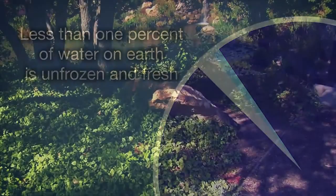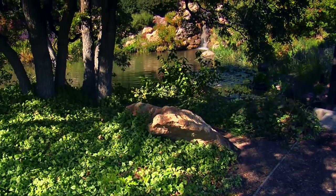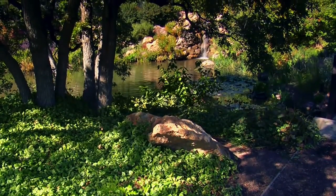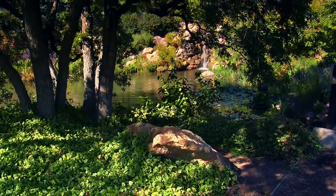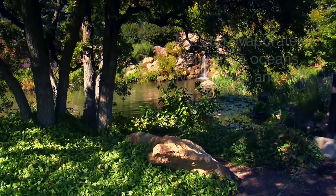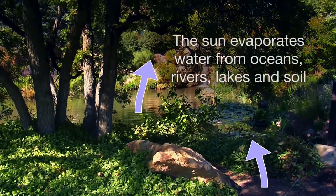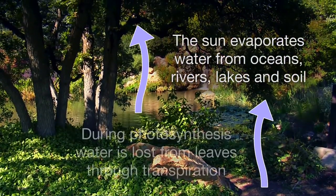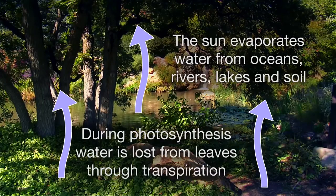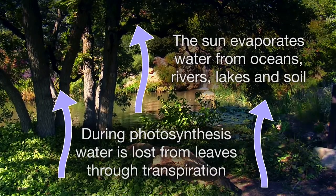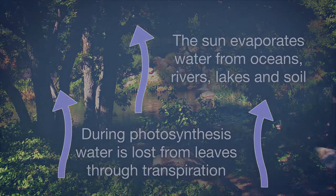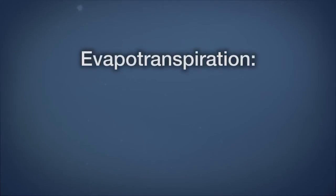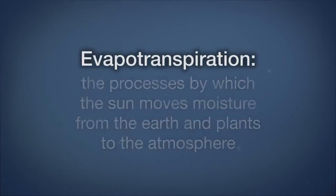The sun is one of the drivers of the hydrologic cycle. Energy from the sun evaporates water from the oceans, rivers, lakes, and soil. During photosynthesis, water is lost from leaves in a process called transpiration. Together, these two processes are referred to as evapotranspiration.